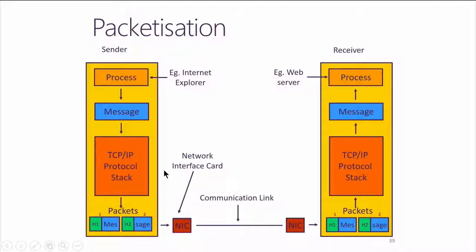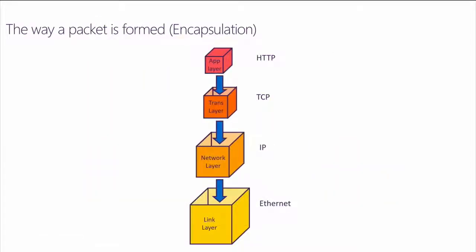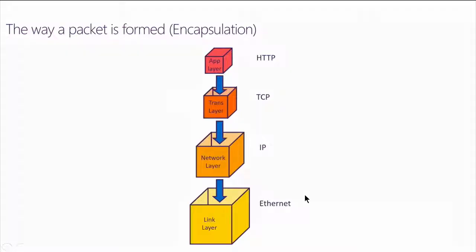As a message transfers between layers, each layer adds its own stamping, which is de-stamped at the receiver. For example: the application layer uses HTTP, the transport layer uses TCP, the network layer uses IP, and the link layer is Ethernet.